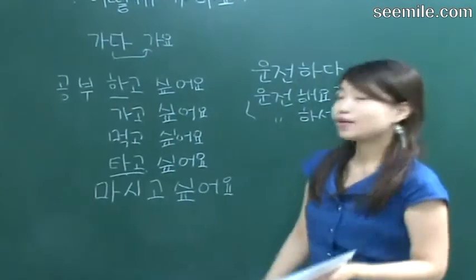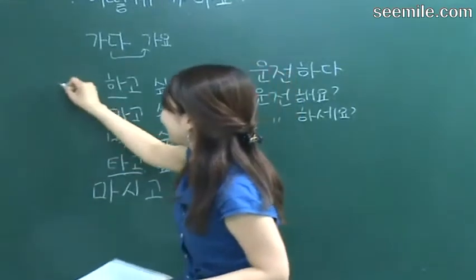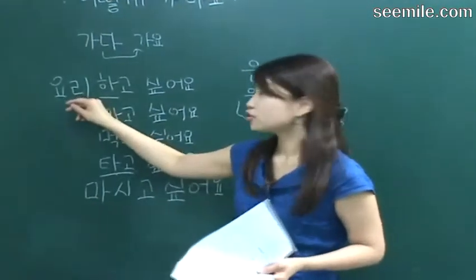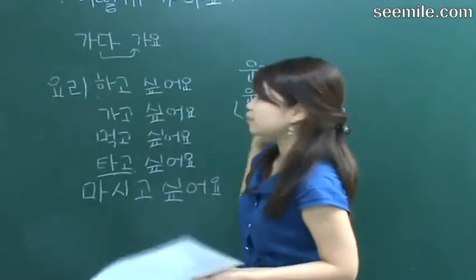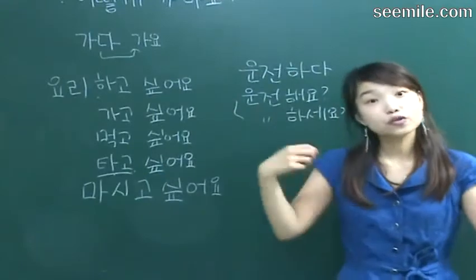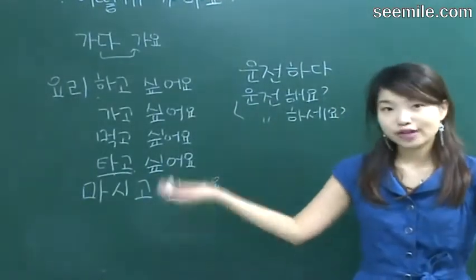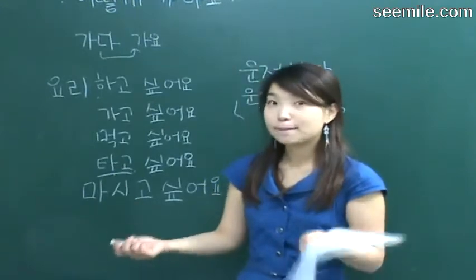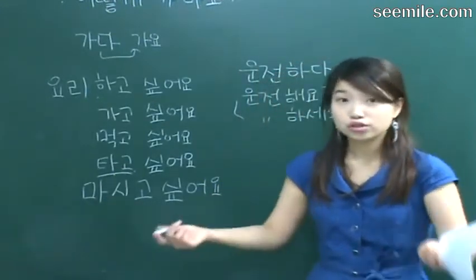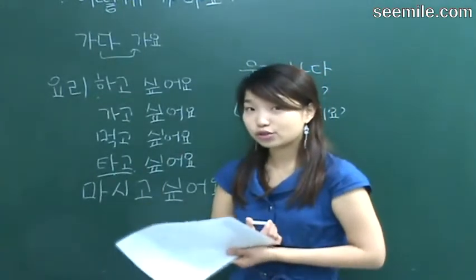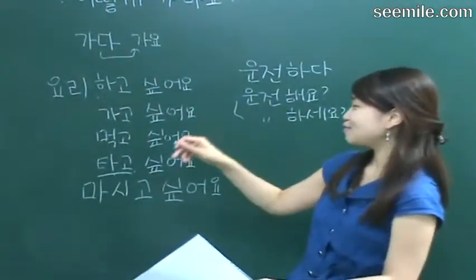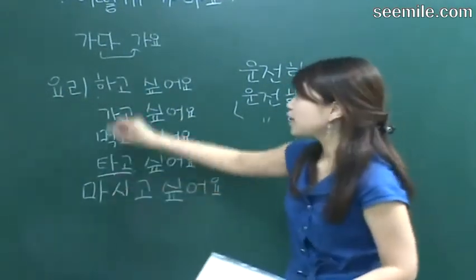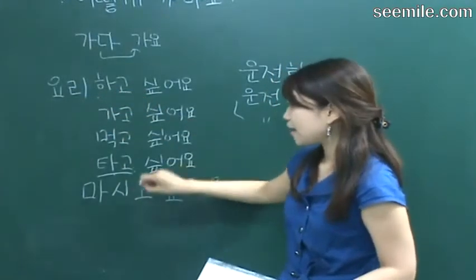요리하고 싶어요 — I want to cook. 요리 means cook — it's a noun, so we need the verb 하다. 요리하고 싶어요. 한국 요리하고 싶어요. 중국 요리하고 싶어요? 일본 요리하고 싶어요? So the key verbs we use with 고 싶어요: 하다, 가다, 먹다, 타다, 마시다.